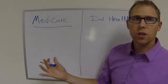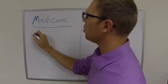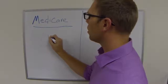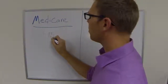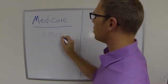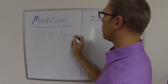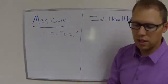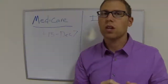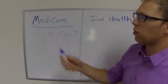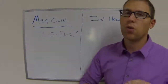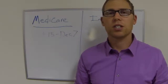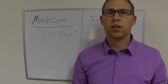With Medicare, they call it the annual election period, and that is what we're going into — from October 15th till December 7th. For Medicare, most people don't know this, but it's for people on disability or people that are turning 65 or aging in.